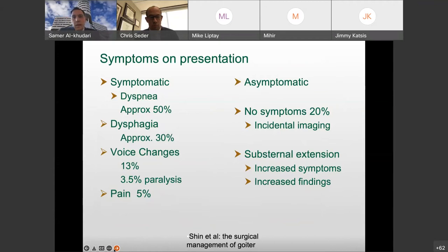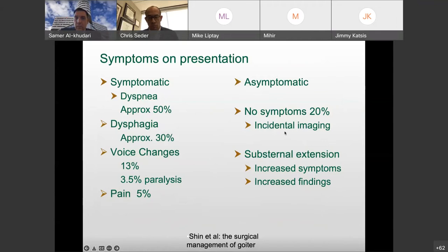Regarding symptoms: 50% of patients will note some dyspnea, 30% will note dysphagia, and rarely you'll identify vocal cord paralysis. A few percent of patients will have pain. But really, 20% of patients can get picked up incidentally on imaging and deny any symptoms, and it doesn't always seem to correlate with what we're seeing on imaging.